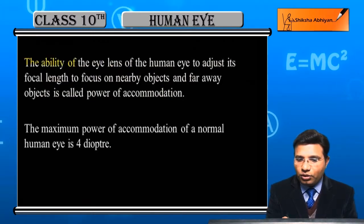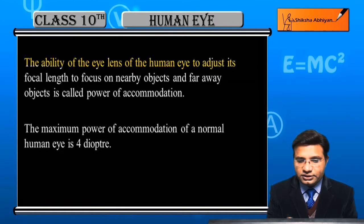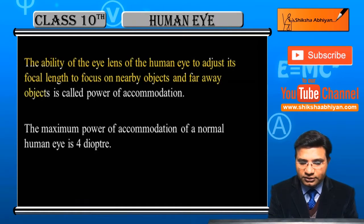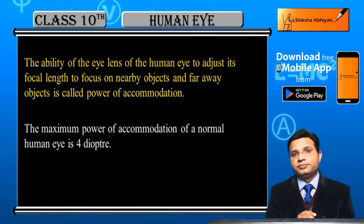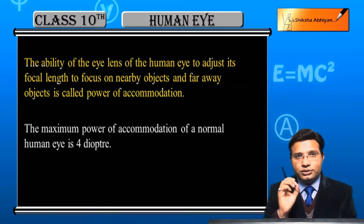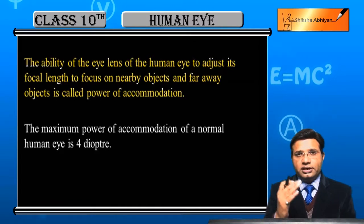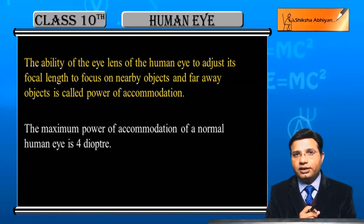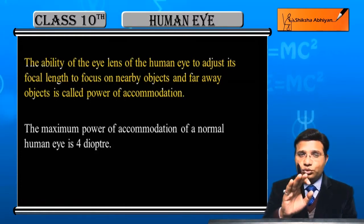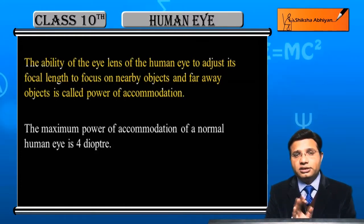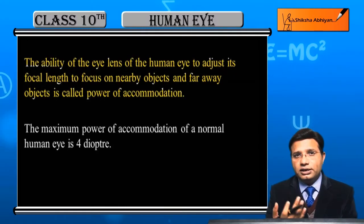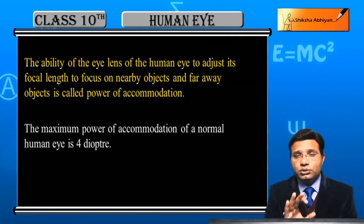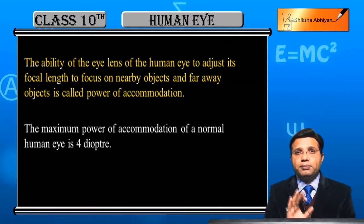The ability of the eye lens of the human eye to adjust its focal length to focus on nearby objects and far away objects is called power of accommodation. हमारे eye lens की ये खूबी है कि दूर की object को देखने के लिए और पास की object को देखने के लिए अपनी focal length की value को वो change कर सकता है — कम या ज्यादा कर सकता है। इस adjustment को या इस ability को बोलते हैं power of accommodation।